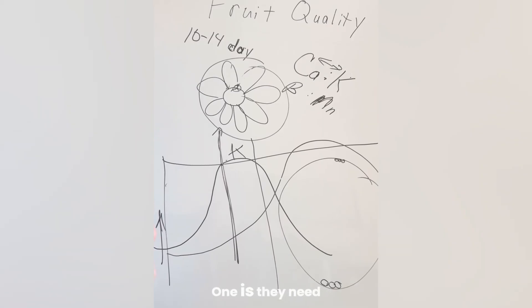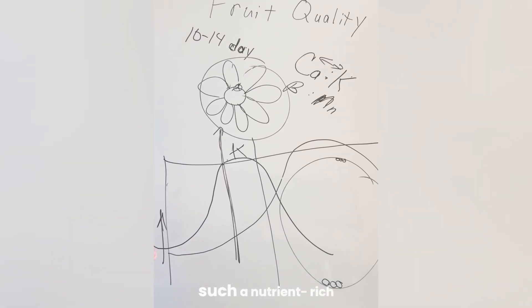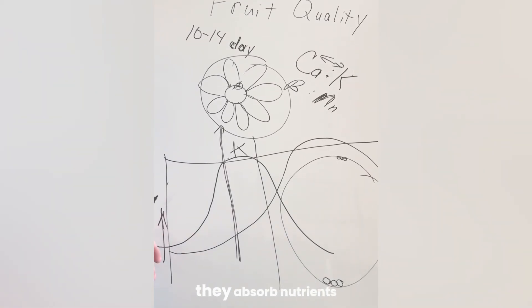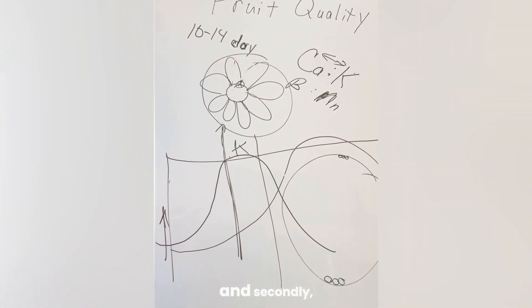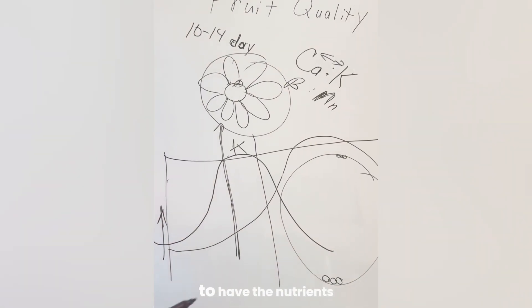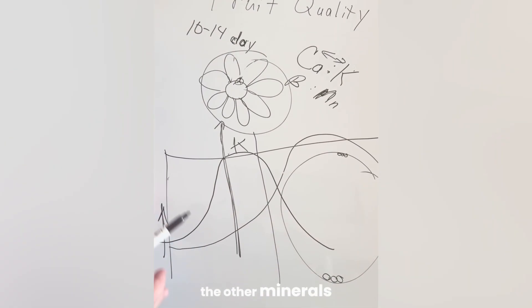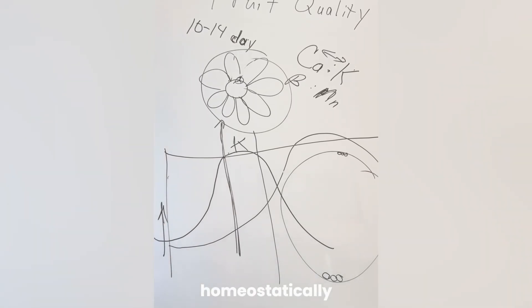That means two things. One is they need to be in not such a nutrient-rich environment that they absorb nutrients even though they might desire not to. And secondly, it means they need to have the nutrients, the other minerals that allow them to homeostatically regulate nutrients.